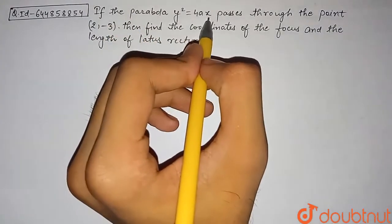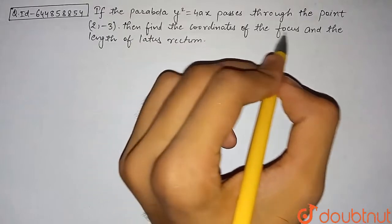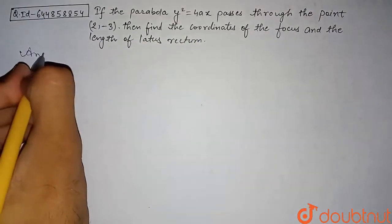If the parabola y² = 4ax passes through the point (2, -3), then find the coordinate of the focus and the length of latus rectum. So let's begin with the solution of this question. Our given parabola is y² = 4ax.